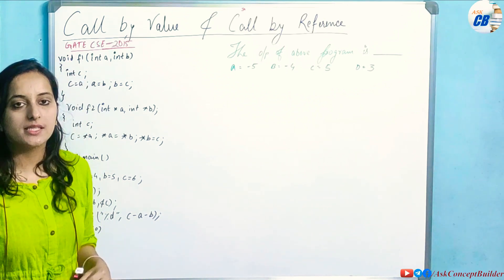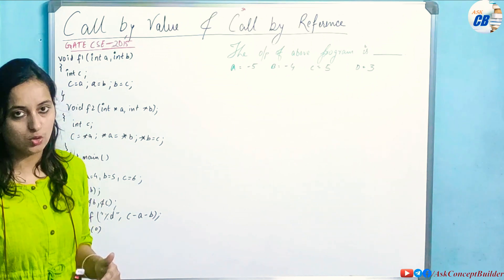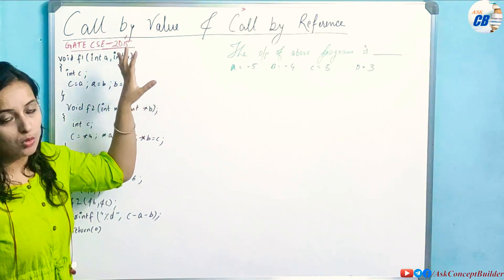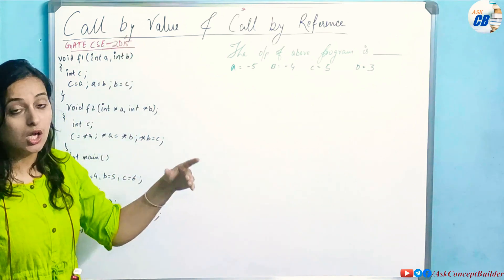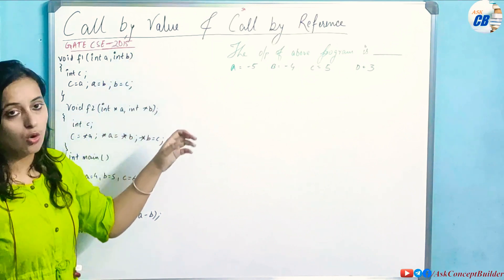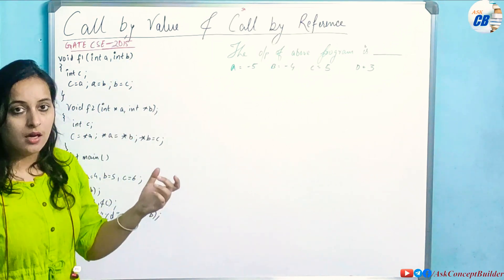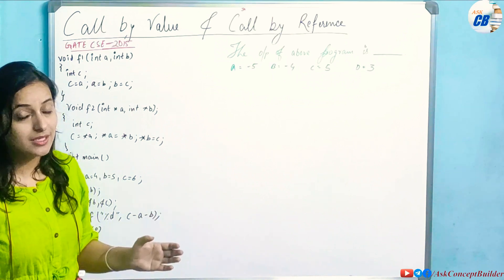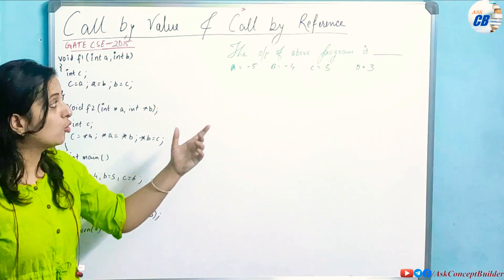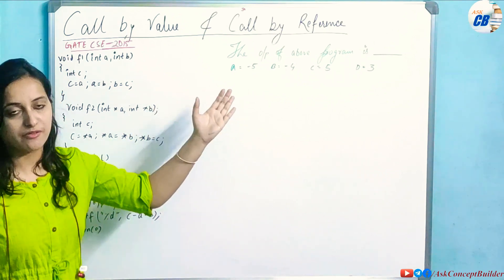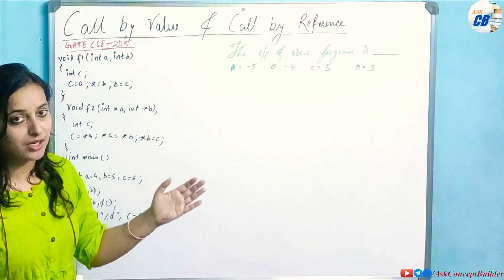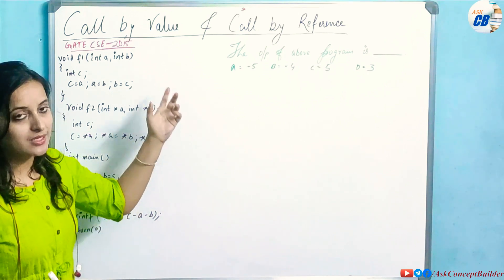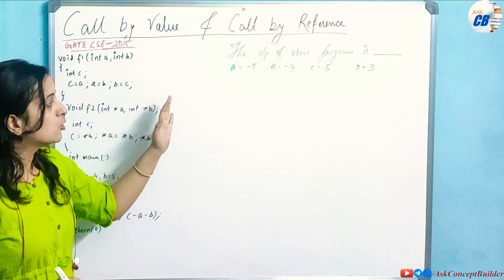In this video I will discuss call by value and call by reference. Call by value means we are calling our functions and passing the parameters as values. Call by reference means we are passing the parameters as addresses. Reference means with some address or reference — if we are calling our function by passing parameters as addresses, that is call by reference; if passing values, that is call by value.